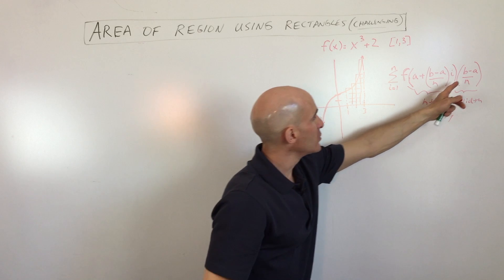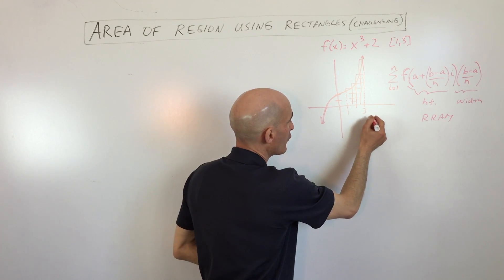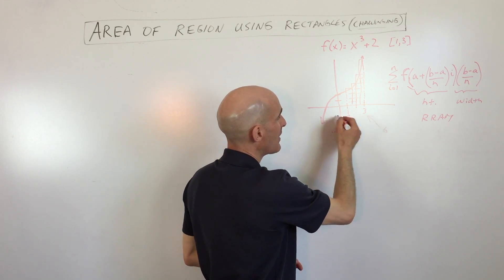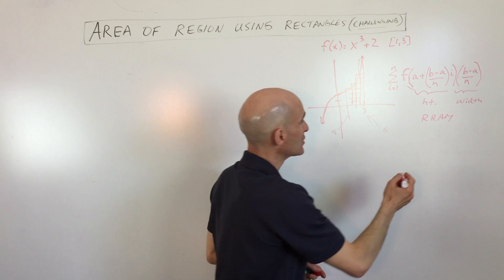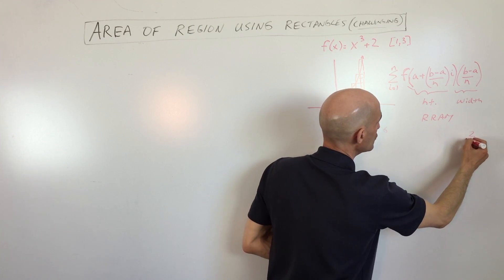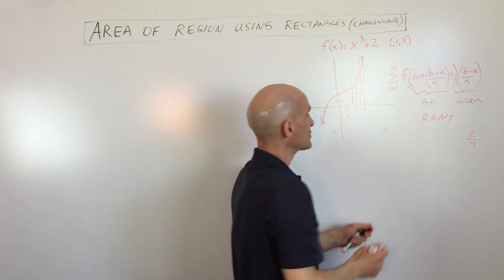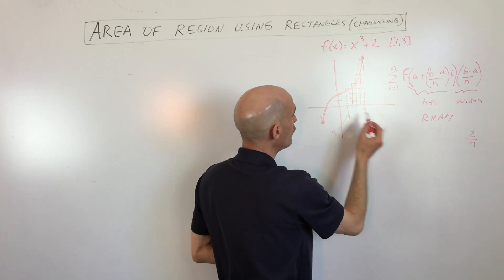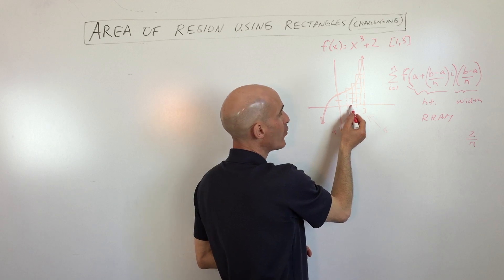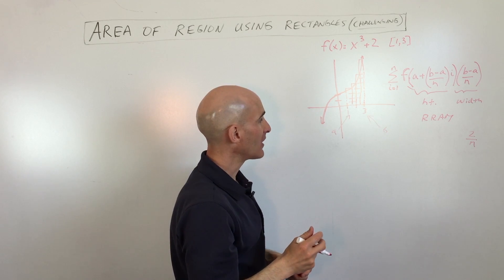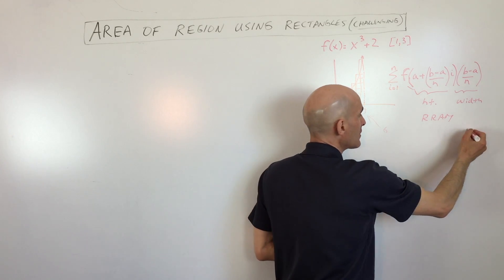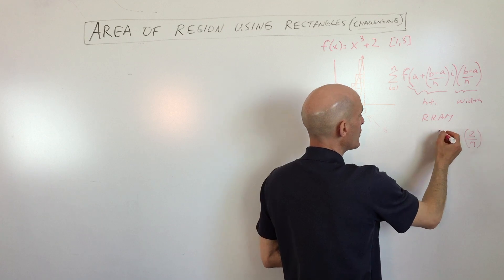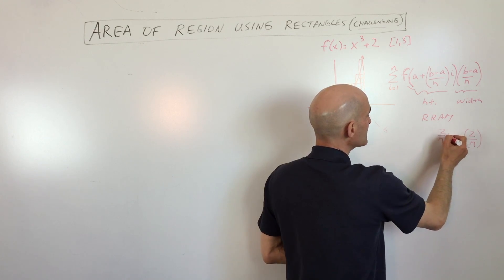When you take B minus A — B is the value on the right and A is the value on the left — that gives us the total distance, which is going to be two. We have two, and we're dividing it by N. So if N is four, that means we're going to have four rectangles, giving us two fourths, which is one half. That's going to be the width of each rectangle. The B minus A divided by N is the same as the width of each rectangle times i.